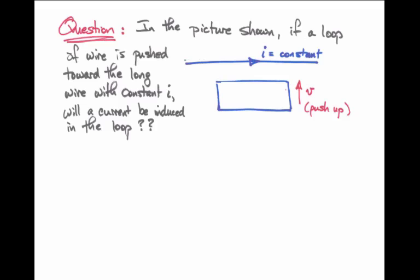Let's suppose we have a loop of wire in the shape of a square or rectangle, and we are trying to push it up closer and closer toward a long wire carrying a constant current I. We could ask, what will be the direction of the current that's induced in the loop of wire as a result of being shoved up closer to the long straight wire?